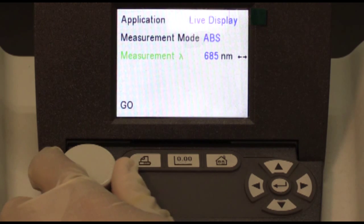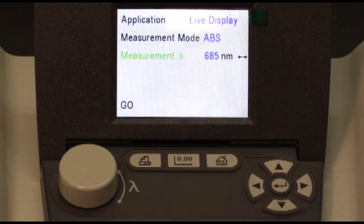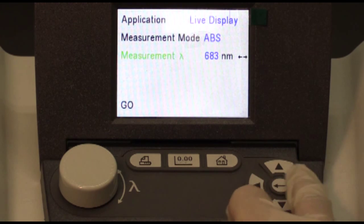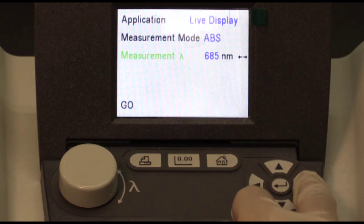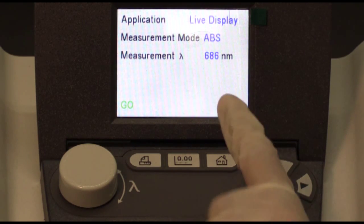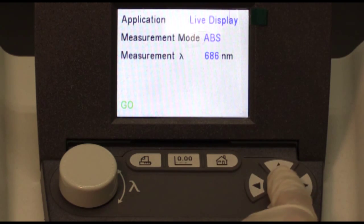The dial will adjust in 10 nanometer increments. For fine-tuning adjustment, use the left and right arrow keys. Once it's been set to the wavelength of interest, scroll down until the go is highlighted in green. To enter this wavelength, hit the enter button.